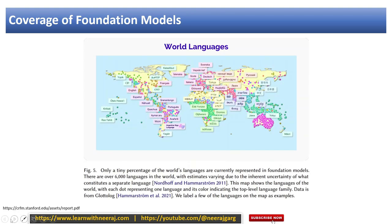Regarding language coverage, the world has over 6,000 languages but foundation models are trained on only a tiny percentage of them. So foundation models cannot solve all of the world's linguistic problems as of now. Different research communities have been training foundation models for their regional languages, and we will see a lot of evolution in the coming years and months since these are evolving at a very rapid rate. This is still the beginning and there is a lot of scope in the near future.